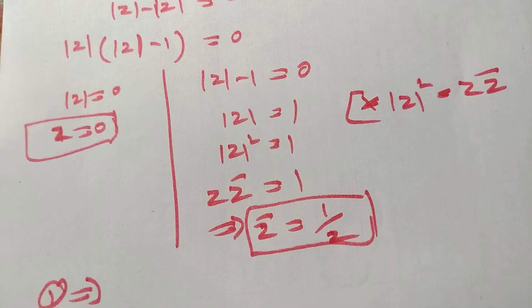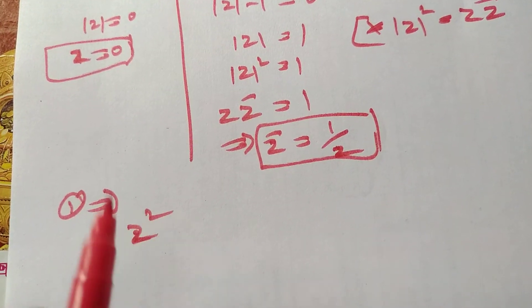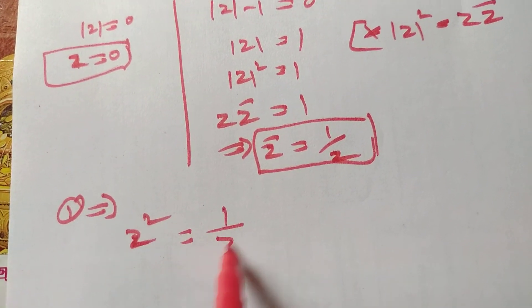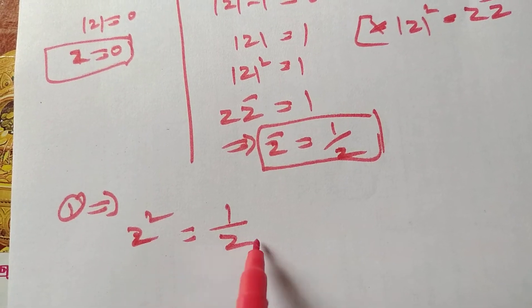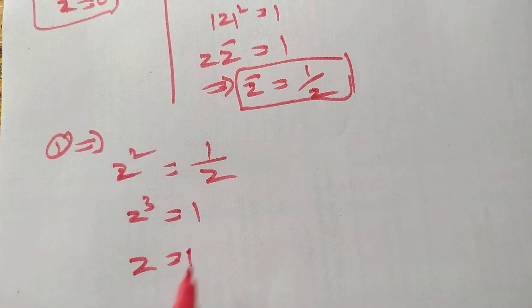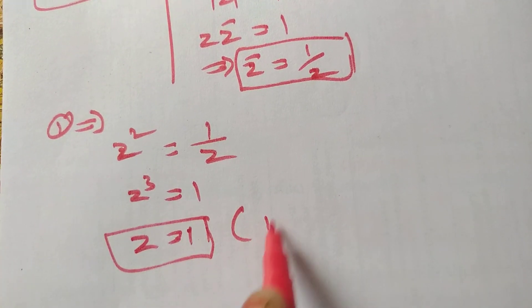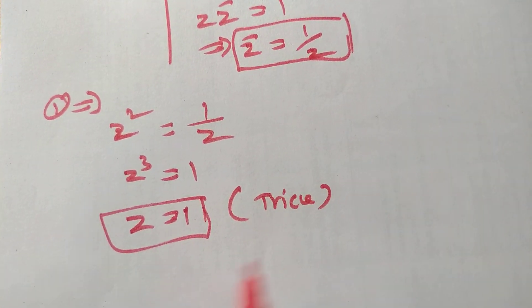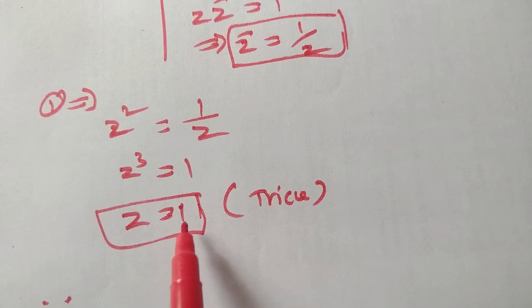Substituting into the given equation z squared equal to z bar, we get z squared equal to 1 by z. Cross multiplication: z into z squared, so z cube equal to 1. Therefore z equal to cube root of 1.